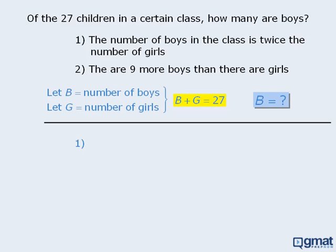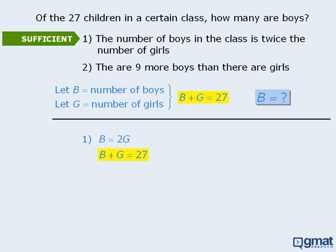Beginning with statement 1, we are told that the number of boys is twice the number of girls. So using the variables we assigned earlier, we can write B equals 2 times G. Does this provide enough information to answer the target question? If we add this to the information we summarized earlier, we see that we have two equations. Since we could use these equations to solve for B, we know that statement 1 is sufficient.